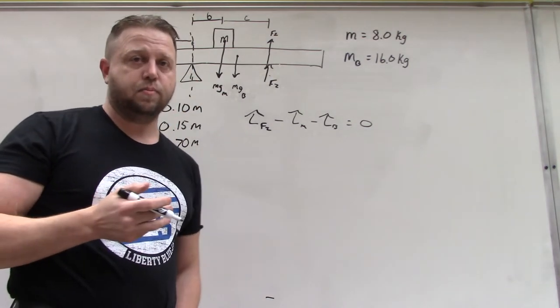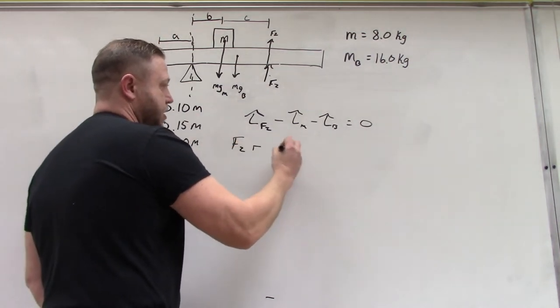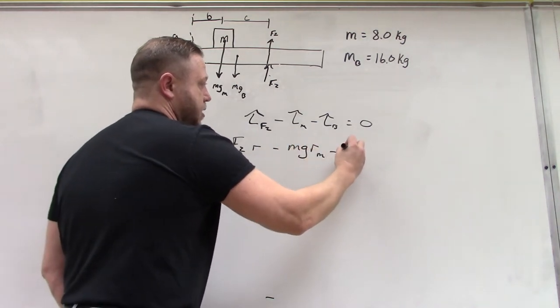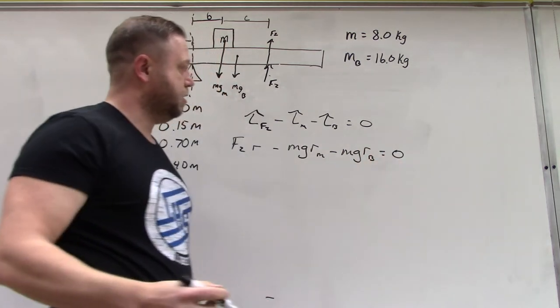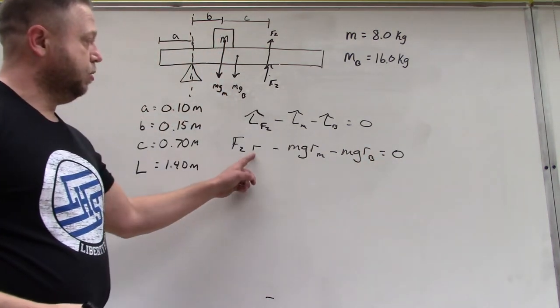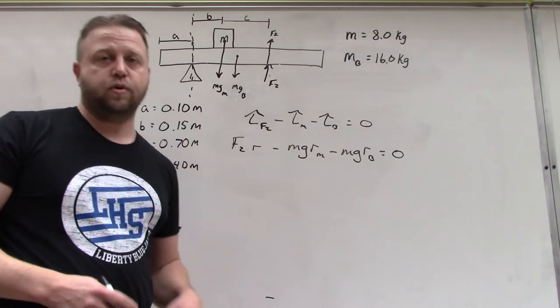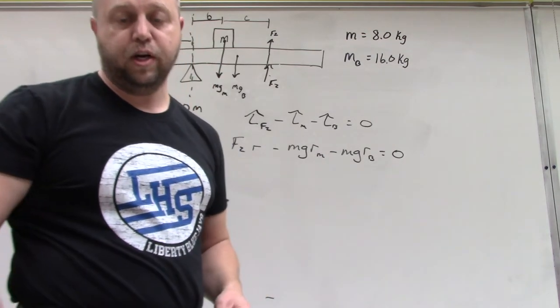We're going to have force two times radius minus mgr for the mass minus mgr for the beam, and all that's going to sum up to equal zero. Let's start thinking about what these three r's are going to be, because this is usually the trickiest part of any of these problems: finding that radius measurement for each one of the forces.